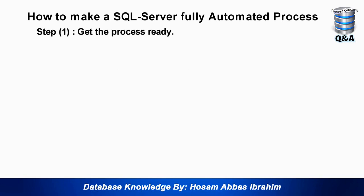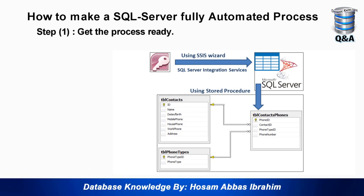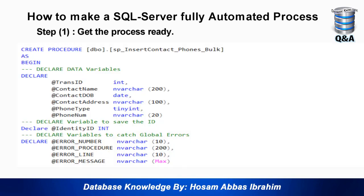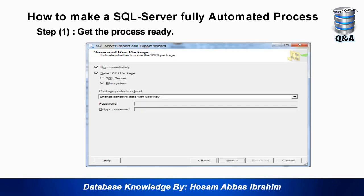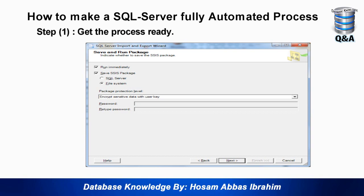Step number one: get our process ready. In the previous video we learned how to transfer data from Microsoft Access to Microsoft SQL Server using the wizard, and we made a stored procedure to transfer this data into our structure. Remember to run the wizard using Management Studio version 10.50 — not later than that, because it will create problems with the version of the package.